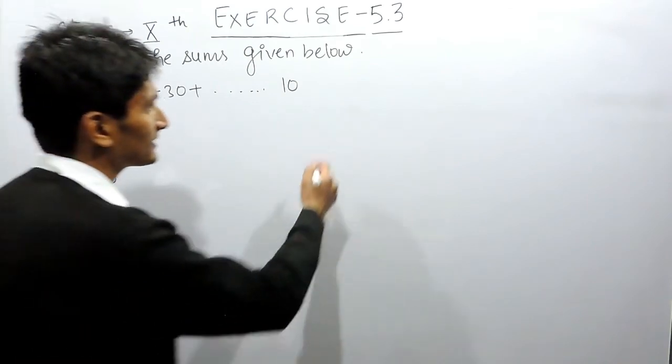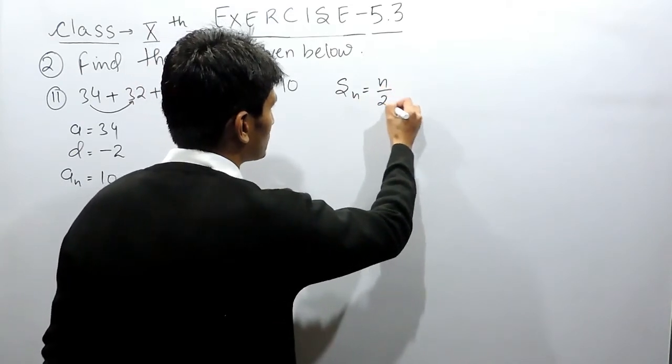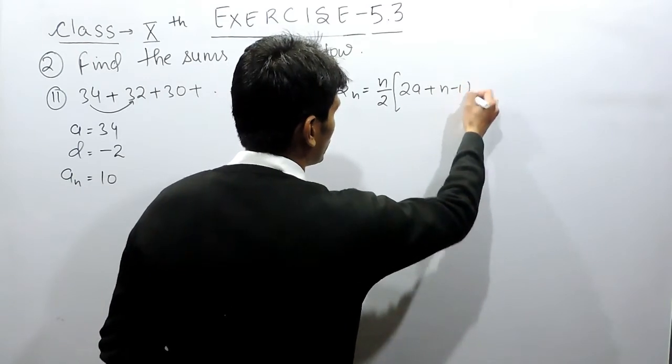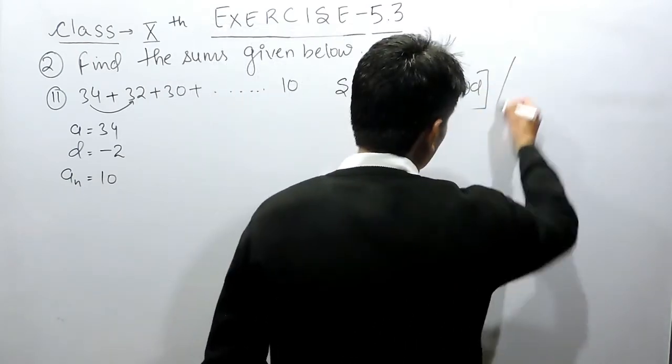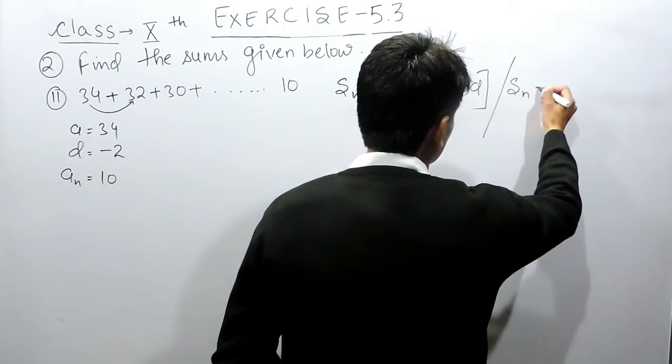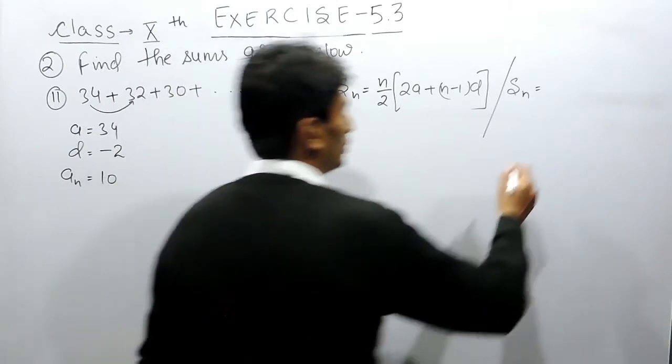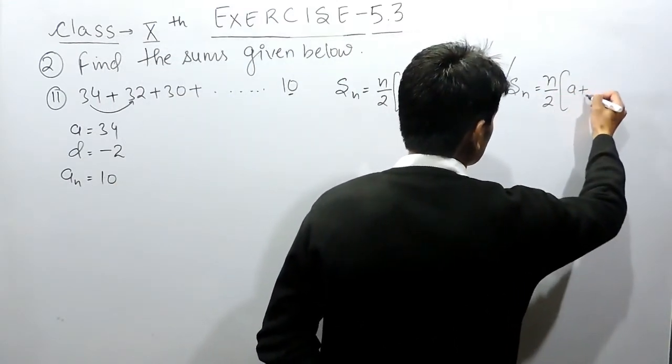To find the sum of n terms, we have a formula: S_n = n/2[2a + (n-1)d]. This is the first formula. There is another formula for finding the sum when the last term is given: S_n = n/2(a + l).